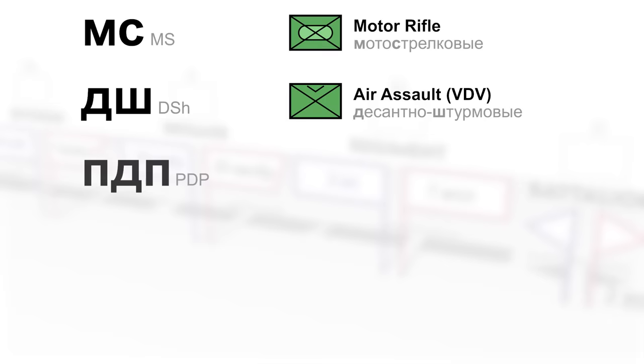MS, which looks like a Latin MC, means motor rifles, which is their most common type of infantry. DSHA means air assault, and PDP means parachuter airborne regiment. These are VDV formations.